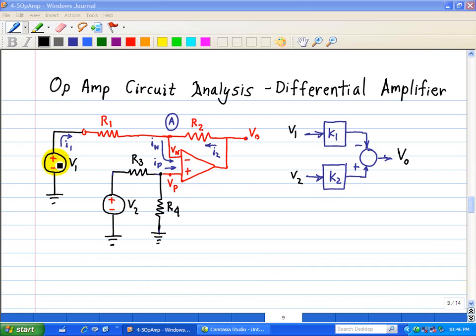One applied at the inverting end, and the other applied at the non-inverting end. You can think of this amplifier or subtractor as a combination of an inverting amplifier and a non-inverting amplifier. And we can use the superposition principle to see what's the relationship between VO and V1 and V2.